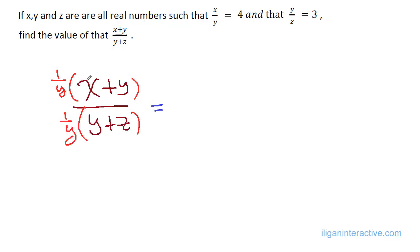Now, what will be left will be x over y plus 1, and the denominator will just be 1 plus z over y. And I think you can see it now that x over y is just 4.